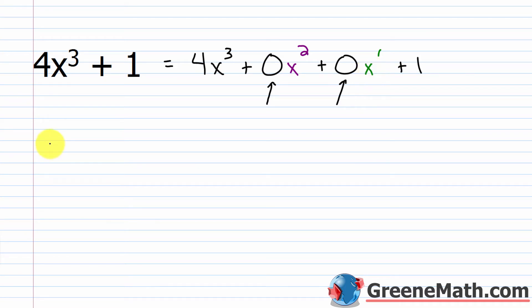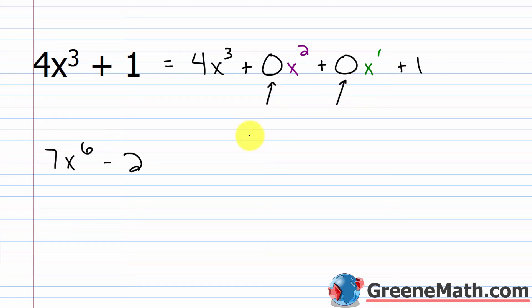If I had something like 7x to the sixth power minus 2, my highest power on x is the sixth power. So I'm missing x to the fifth power, fourth power, third power, squared, and first power. That would be five missing powers — a lot for your teacher to throw at you, so you'll probably just get one or two missing powers.